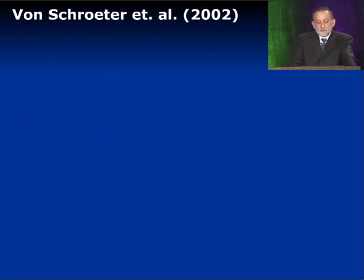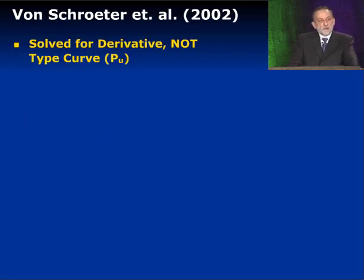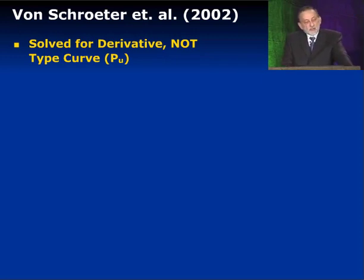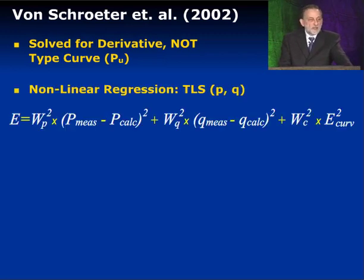What did von Schroeter do? He didn't solve for the type curve. Usually we get the derivative from the type curve, but what he did was get the type curve from the derivative — so he solved for the derivative. The strength of his method is the application of nonlinear regression; he used a procedure called total least squares nonlinear regression.